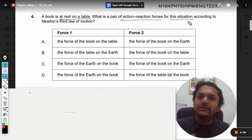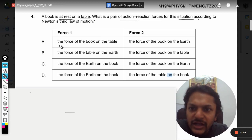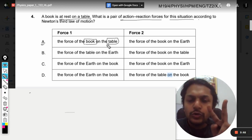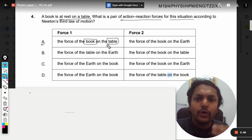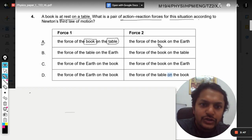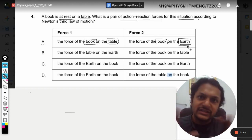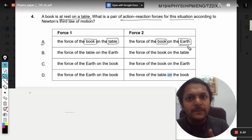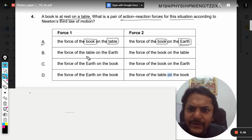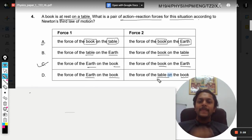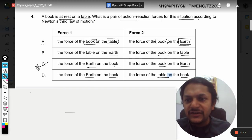For example, in the first option, the force of the book on the table and the force of the book on the earth - now this earth becomes the third body and we are not interested in this kind of case. So by that principle, this is table, this is earth, this is book - we are interested only in two-body systems, so C will be the answer.